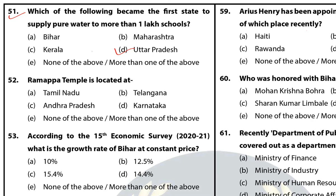Question 52: Ramappa Temple is located in Telangana. Question 53: According to the 15th Economic Survey 2020-21, what is the growth rate of Bihar at constant price? The answer is A — 10%. According to the report, the state has an economic growth rate of 10.5% at constant prices and 15.4% at current prices.